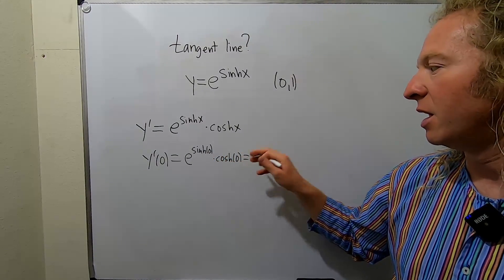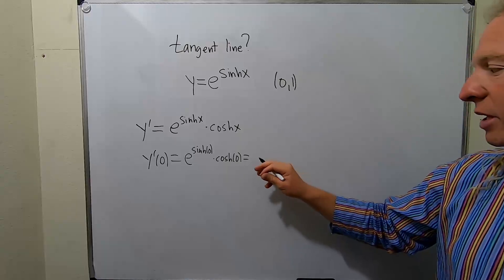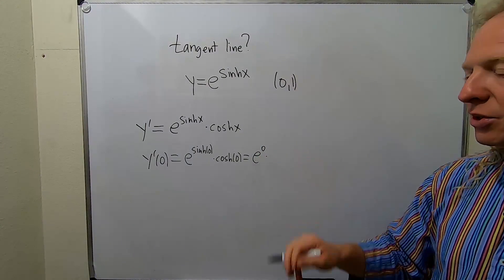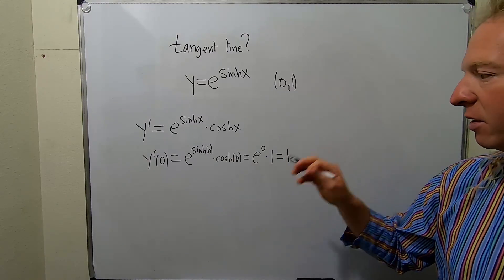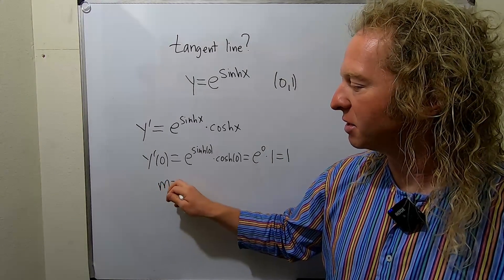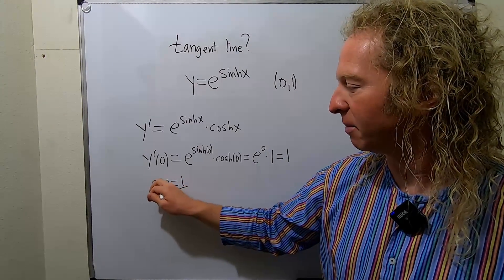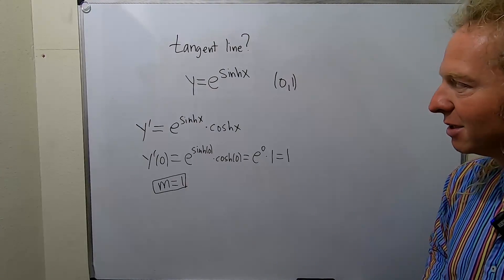Beautiful stuff. sinh 0 = 0, so we get e^0. cosh 0 = 1, so we get 1. This is our m. This is going to be our slope. I'm going to put that in a box because that, my friends, is an accomplishment.